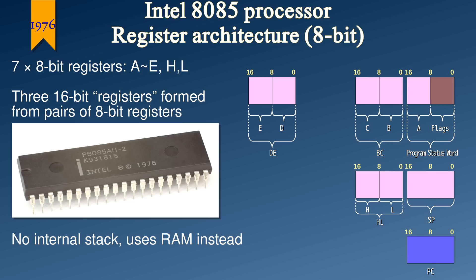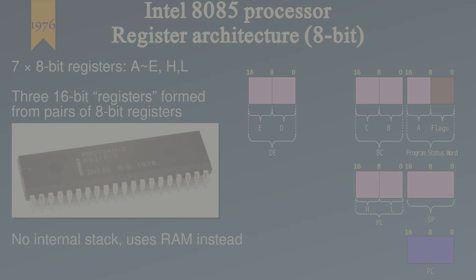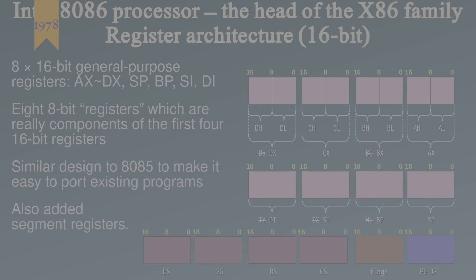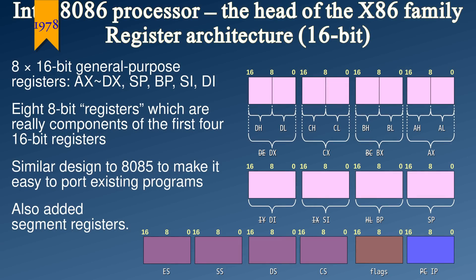So Intel went back to the drawing board, investing heavily in CPU design. Two years later, in 1978, they came out with the Intel 8086.